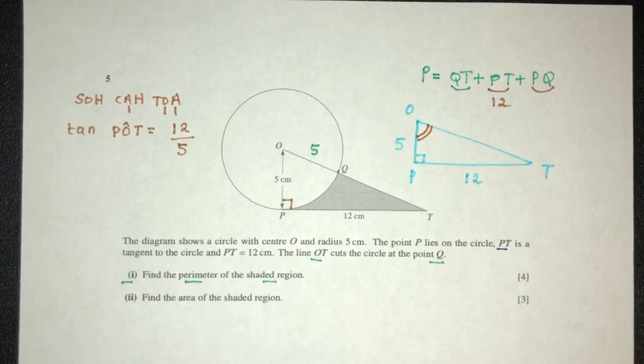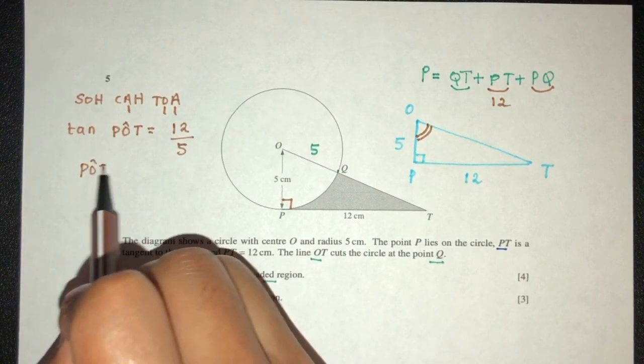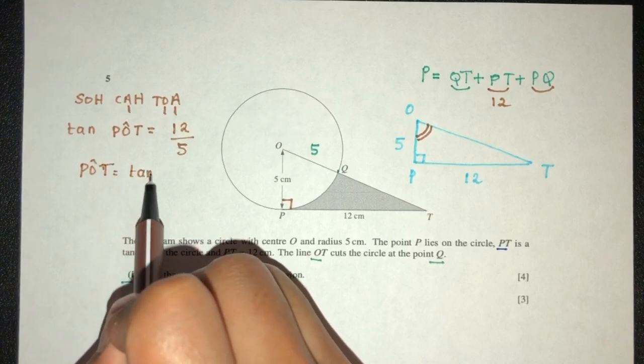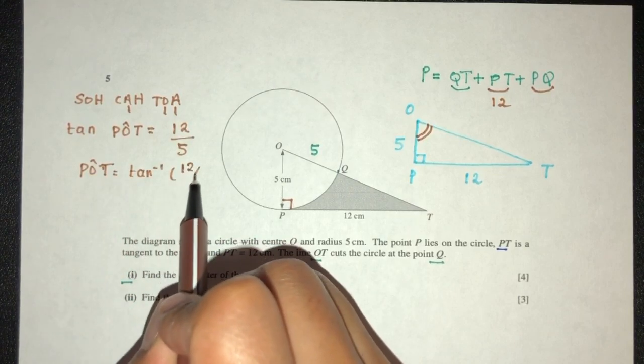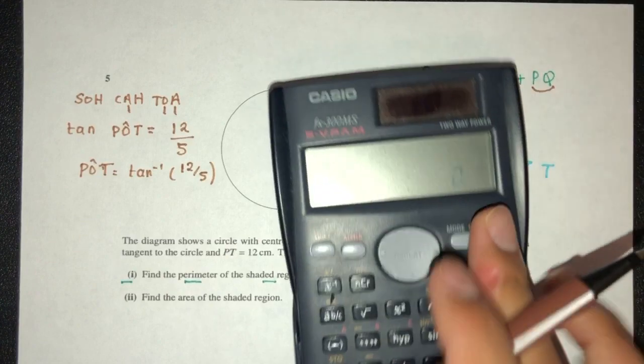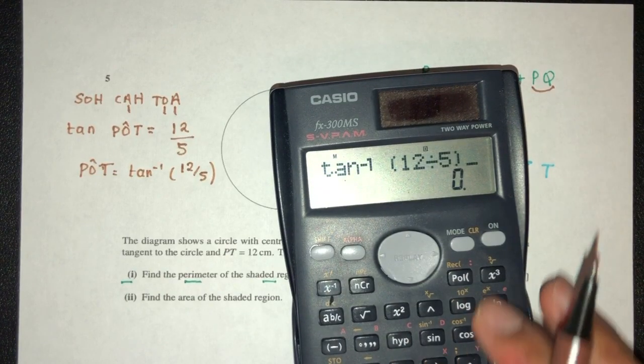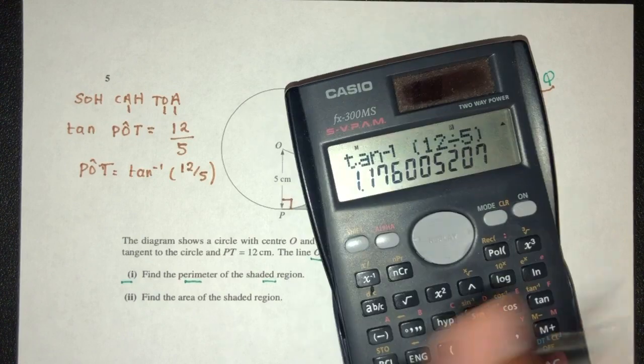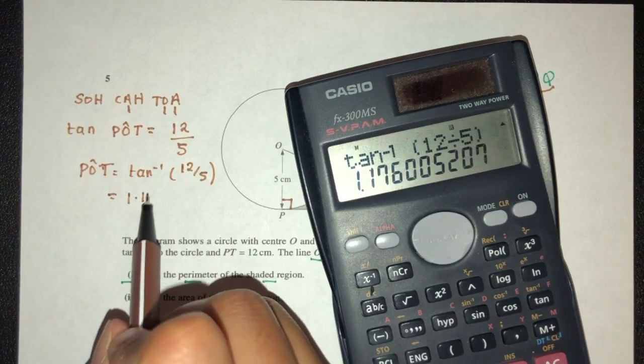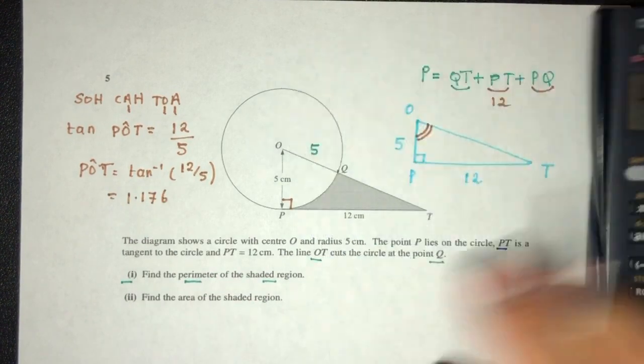Right. Now we have this equation. So POT is what? It is simply tan inverse of 12 over 5. That will be in terms of radians, 1.176. This is the angle right here.